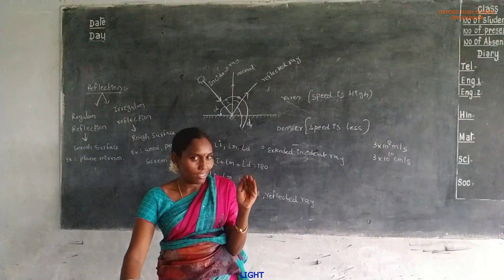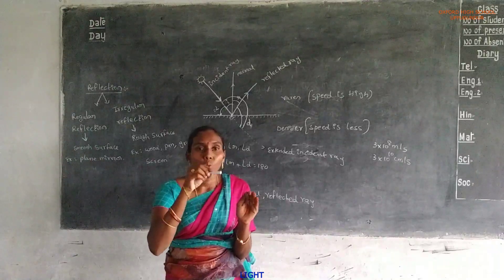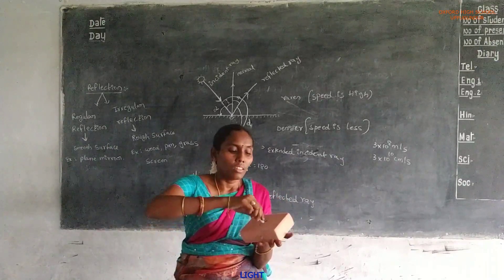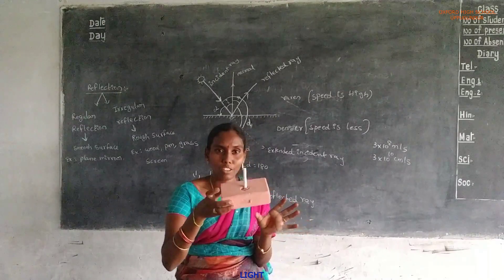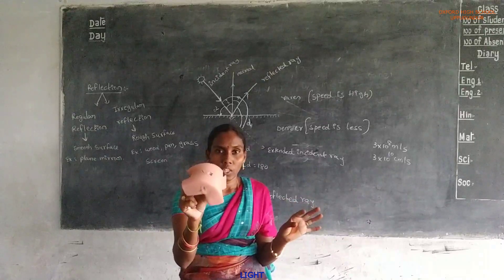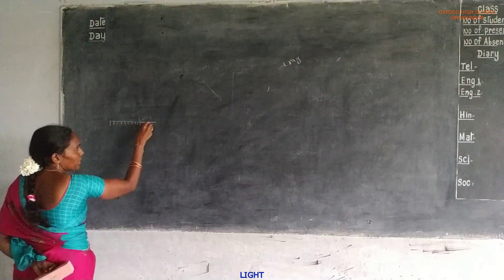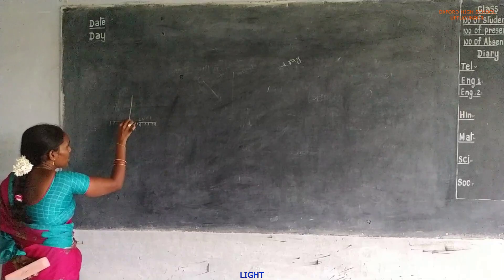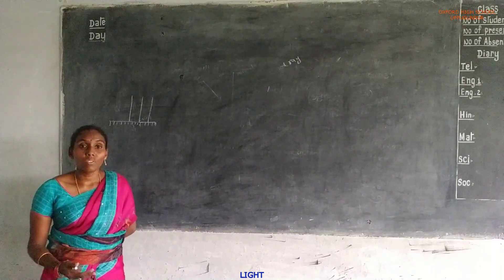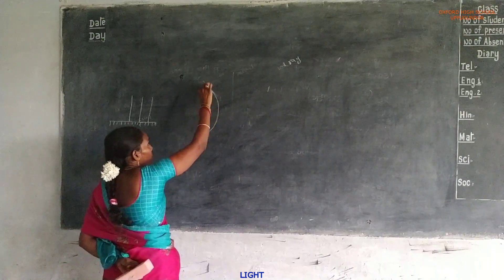How to draw the normal to a curved surface? This is the curved surface. Here, the normals are drawn to the spherical surface. A spherical surface means any surface which has a bend — it is called a spherical surface.